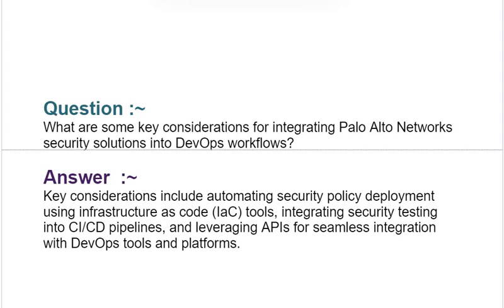Next interview question: What are some key considerations for integrating Palo Alto Networks security solutions into DevOps workflows? Your answer should be: Key considerations include automating security policy deployment using infrastructure as code (IaC) tools, integrating security testing into CI/CD pipelines, and leveraging APIs for seamless integration with DevOps tools and platforms.